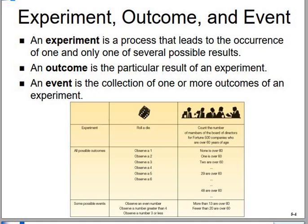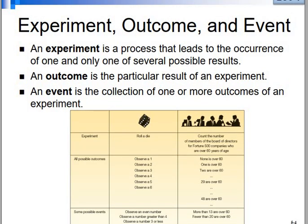Next, we move on to the definitions of experiment, outcome, and event. An experiment is the process that leads to the occurrence of one and only one of several possible results. For example, rolling a die is the experiment. The possible outcomes are face 1, 2, 3, 4, 5, or 6.